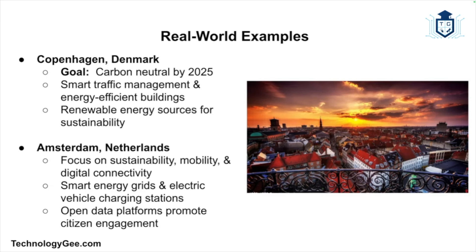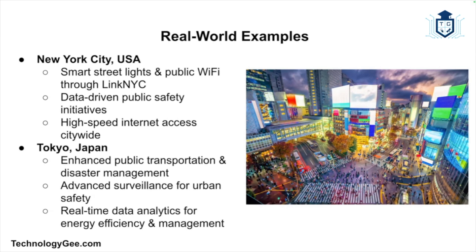Copenhagen aims to become carbon neutral by 2025 through smart city initiatives, using smart traffic management, energy-efficient buildings, and renewable energy sources to reduce carbon emissions. Amsterdam's smart city program focuses on sustainability, mobility, and digital connectivity — including smart energy grids, electric vehicle charging stations, and open data platforms. New York City has implemented smart streetlights, public Wi-Fi, and data-driven public safety initiatives; the LinkNYC project provides high-speed internet access across the city. Tokyo uses smart technologies to enhance public transportation, disaster management, and energy efficiency, with advanced surveillance systems and real-time data analytics for urban management.